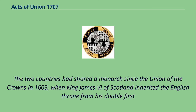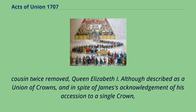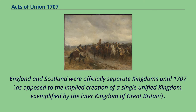The two countries had shared a monarch since the Union of the Crowns in 1603, when King James VI of Scotland inherited the English throne from his cousin twice removed, Queen Elizabeth I. Although described as a Union of Crowns, and in spite of James's acknowledgement of his accession to a single crown, England and Scotland were officially separate kingdoms until 1707.